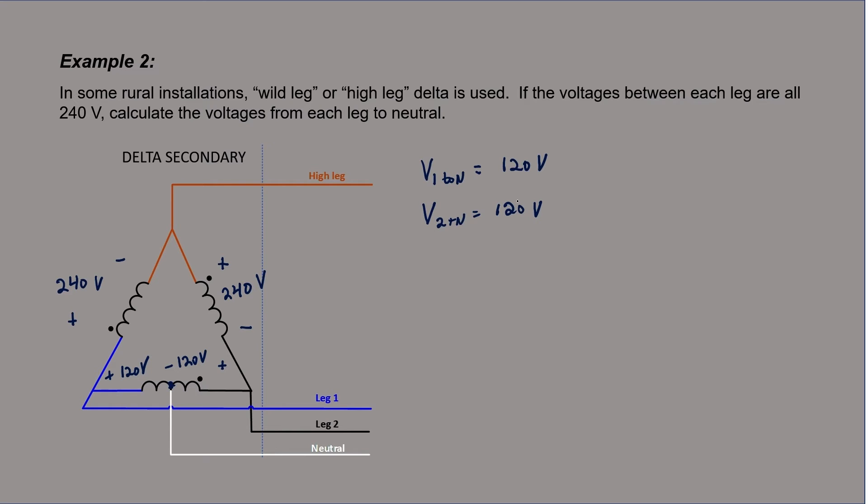we can't just subtract in order to get the voltage from the high leg to neutral because the 240 volts across this leg is out of phase with 120 volts across that leg. We're going to have to use phasors in order to find the RMS voltage here.